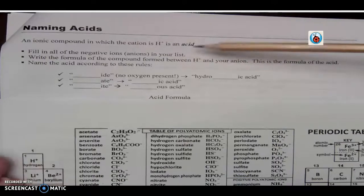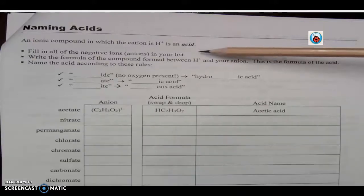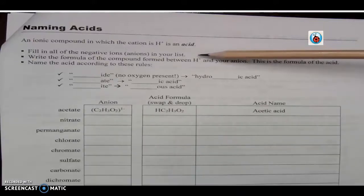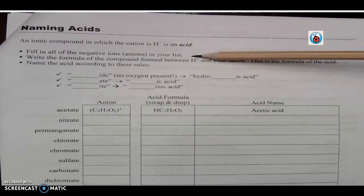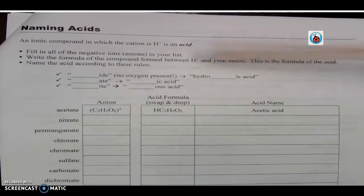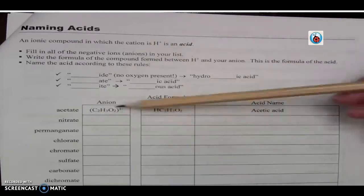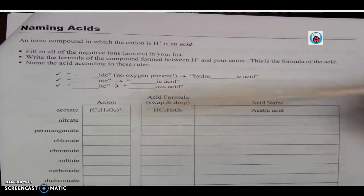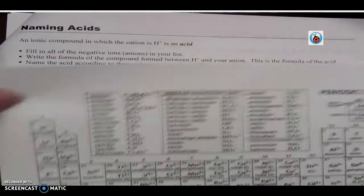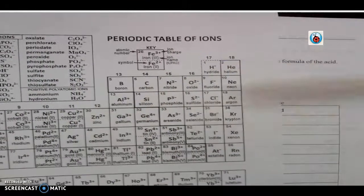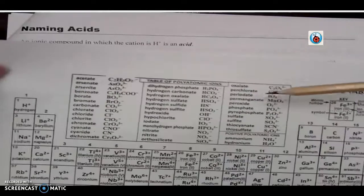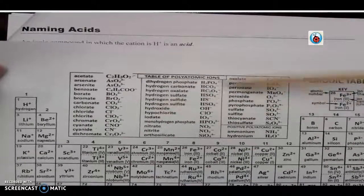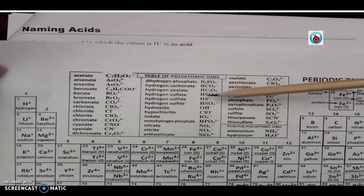So all our acids are going to start with hydrogen. Fill in all the negative ions or the anions in your list. Where do I get these? From my ion chart. If it's a single ion, my negative ions are over here in the non-metals, or a lot of them are going to be polyatomic ions.